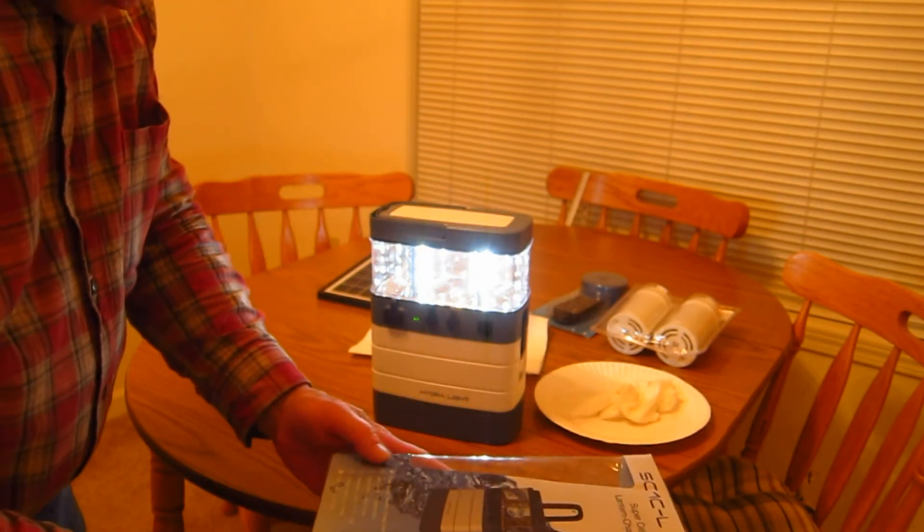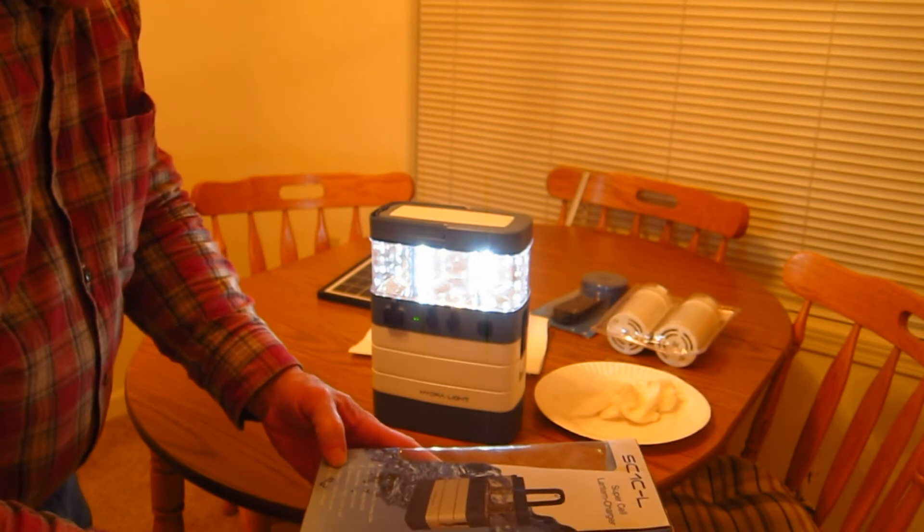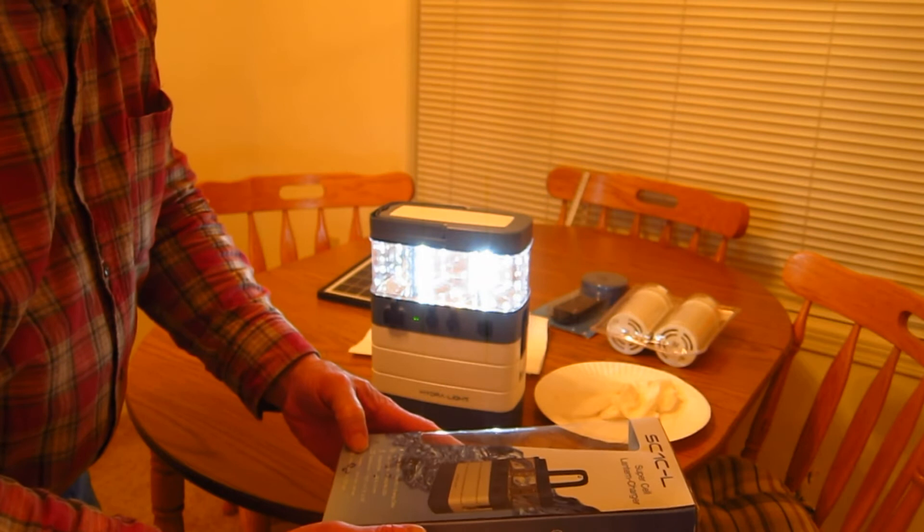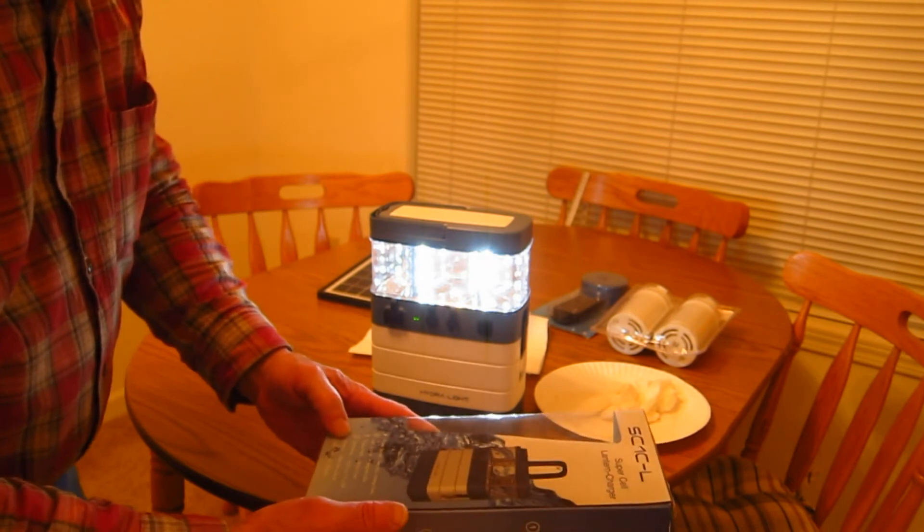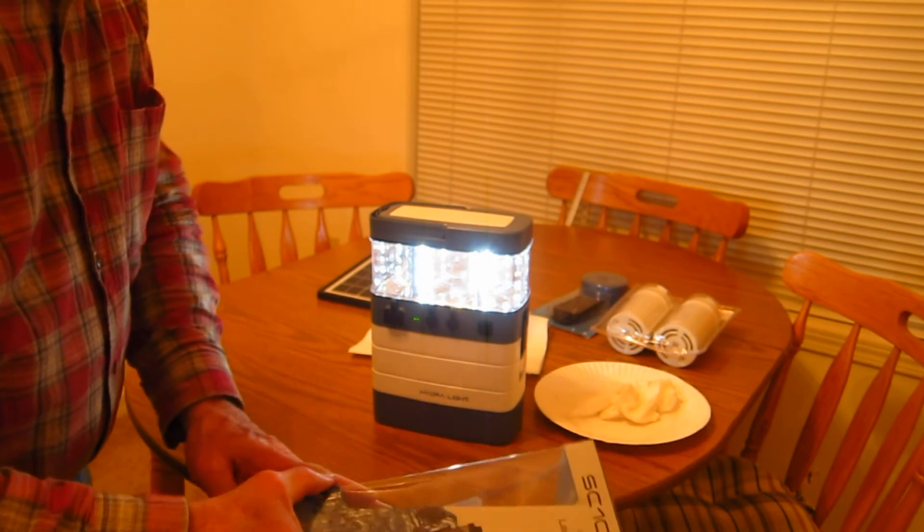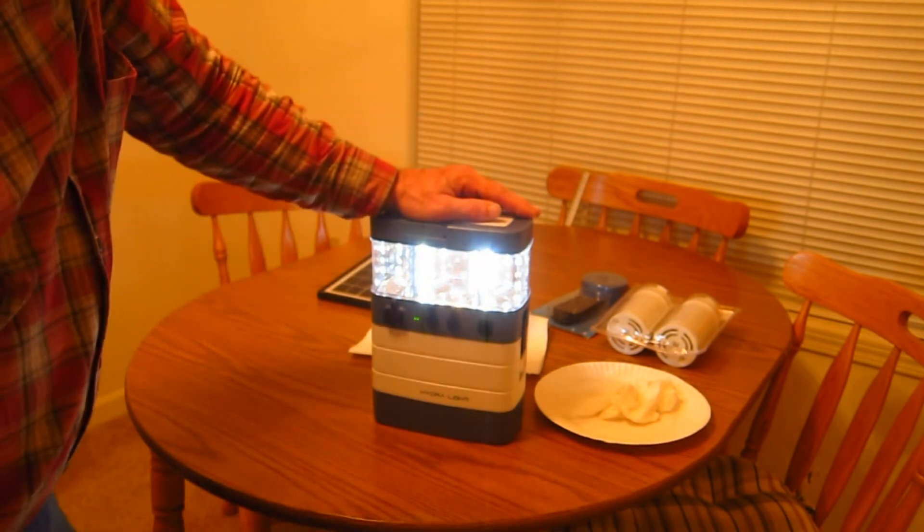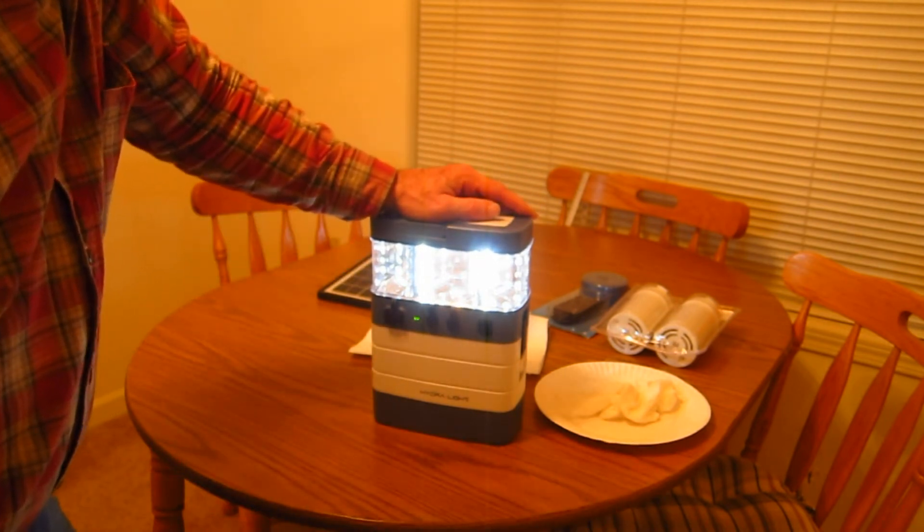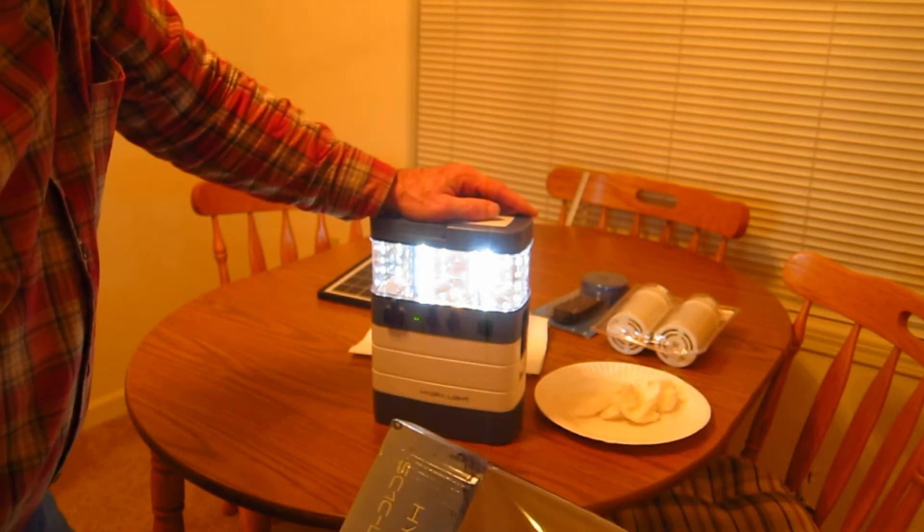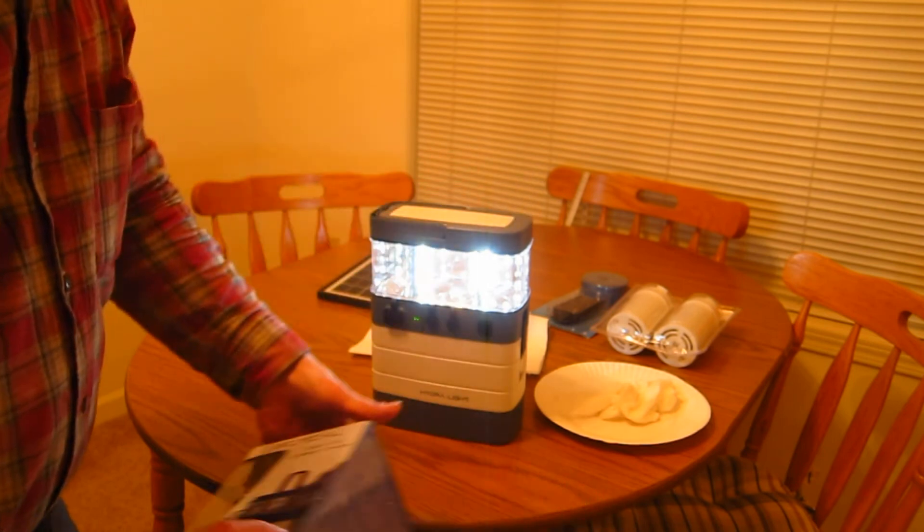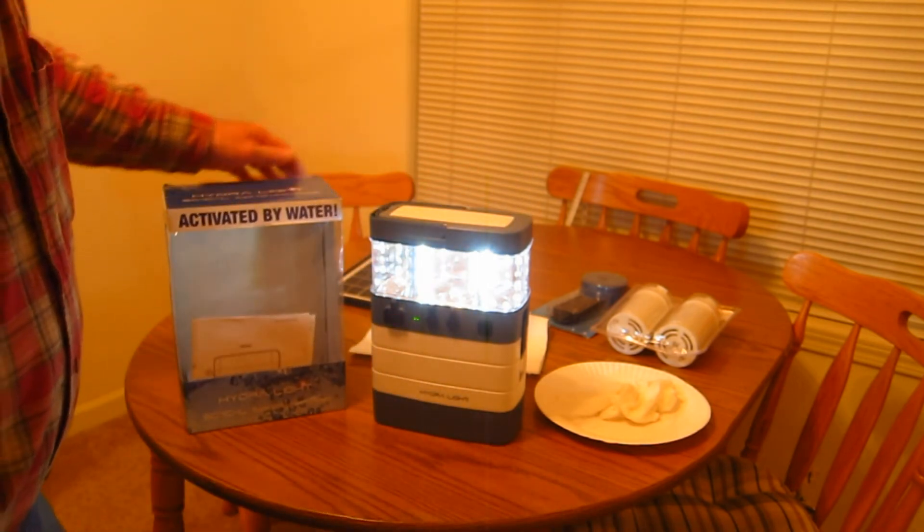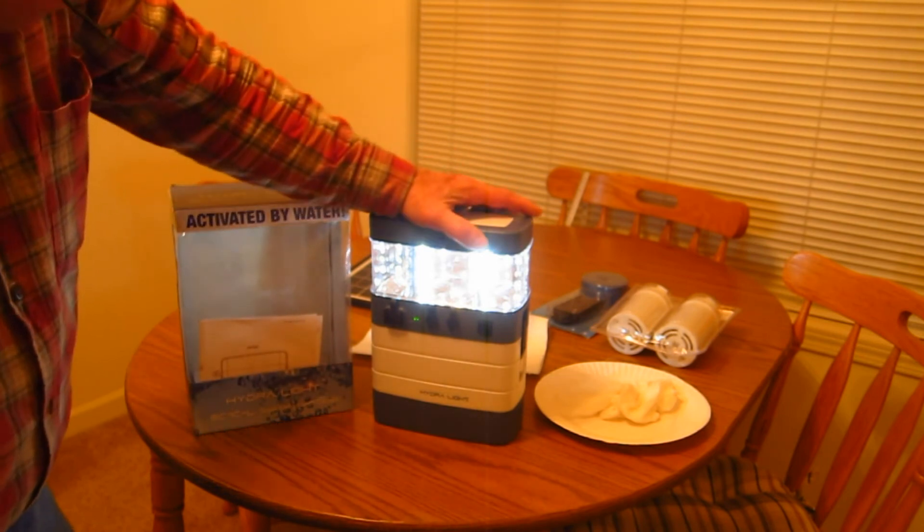And some of the other specs on it are, run time is 300 plus hours for a cell set. So, meaning two cells. And I believe when you take them out, you basically can just store them. Shelf life they say is 25 years. So you can keep reusing them over and over. And 300 hours is quite a long time. So, there you go. The Hydrolite in all it's glory.